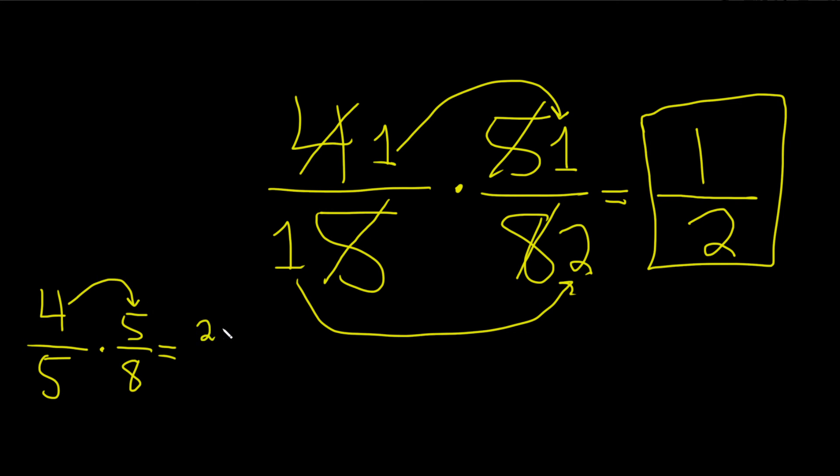4 times 5 is 20. 5 times 8 is 40. You get 20 over 40. So you're almost correct, right? You're just not done.